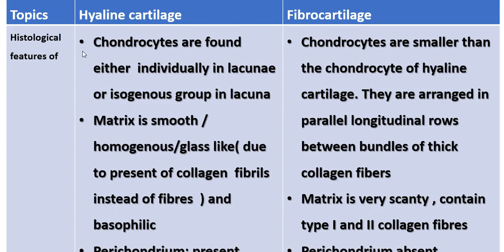Regarding histological features: chondrocytes are found either individually in lacunae or in isogenous groups within lacunae. Lacunae are usually depressed areas of the cartilage matrix. Hyaline cartilage matrix is smooth, homogeneous, and glass-like, staining bluish; it contains perichondrium. In fibrocartilage, chondrocytes are smaller than those of hyaline cartilage and are arranged in parallel longitudinal rows between bundles of thick collagen fibers.